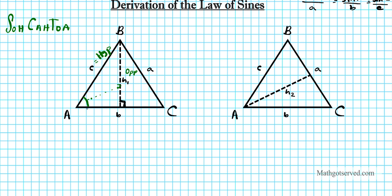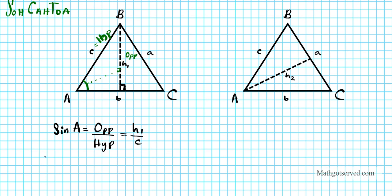The side c is opposite the 90-degree angle, so c is the hypotenuse. Using this right triangle, I know that sine A equals opposite over hypotenuse, so sine A equals h1 over c.